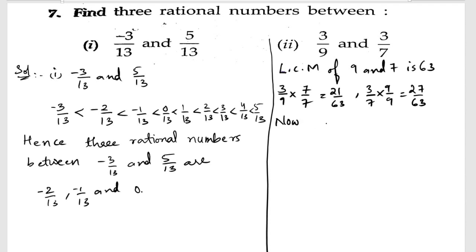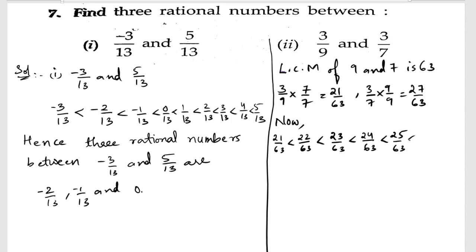Now we can write the numbers between 21/63 and 27/63: 21/63, 22/63, 23/63, 24/63, 25/63, 26/63, and 27/63. Among these we can select any three rational numbers.